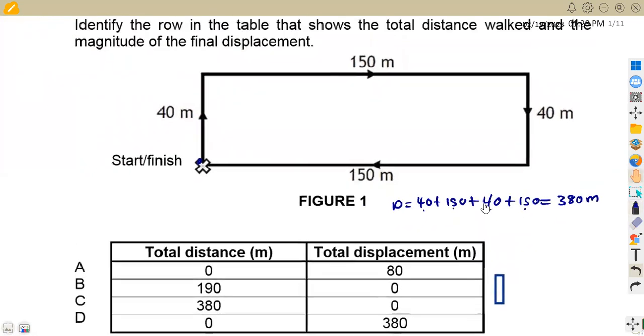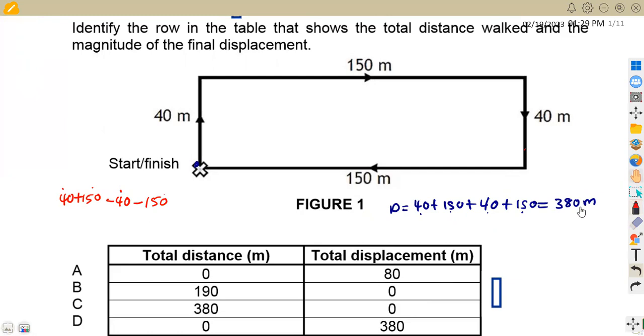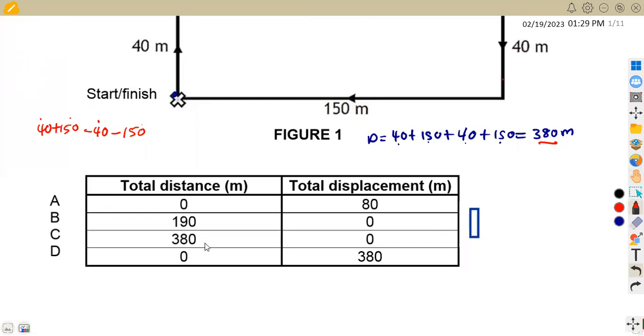Then the displacement - we can see that when going up for the first one, we've got 40 meters going up. Then we've got 150 to the right. To the right is positive, so we add 150. But this time we're going down, so we subtract 40. And this 150 is going to the left, we subtract 150. So we obtain 0. 40 minus 40 is 0, 150 minus 150 is 0. So displacement is 0. Where are we having total distance of 380 and displacement 0? This is on C. The answer on 1.2 is C.